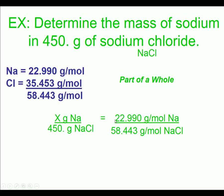Now this just becomes an algebra problem. I can cross-multiply. I can simply divide 22.990 divided by 58.443 and multiply both sides by 450. But whatever method of algebra you use, you should get an answer for X as 177 grams of sodium.